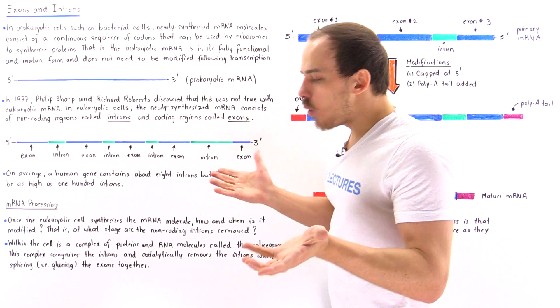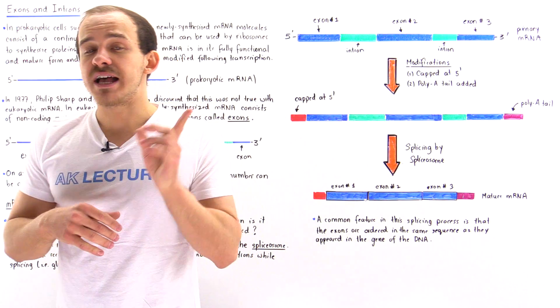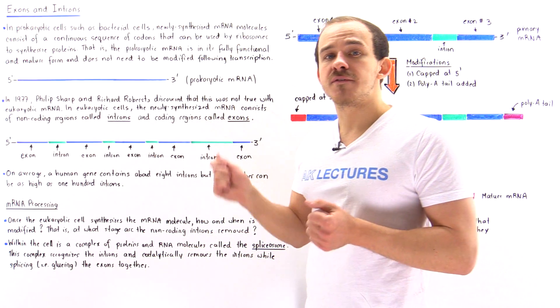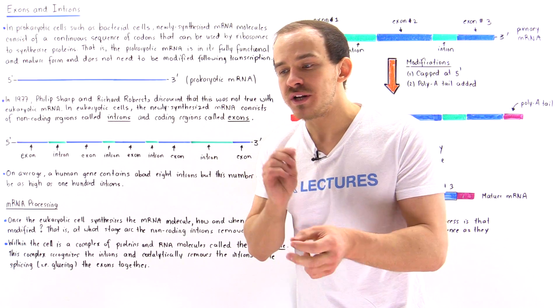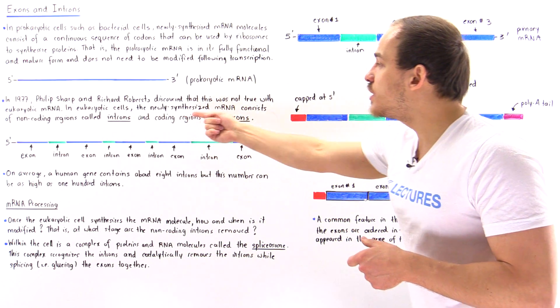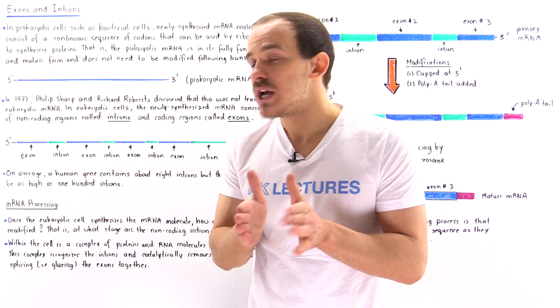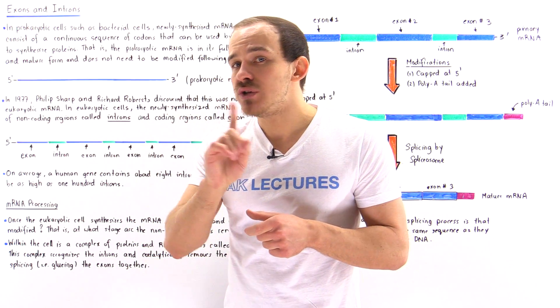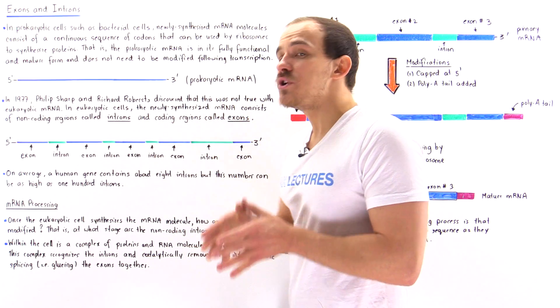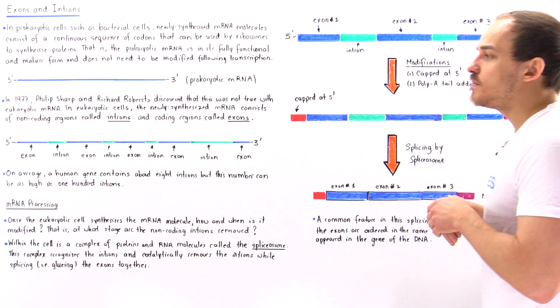Now, for quite some time, we thought the same exact thing was true in eukaryotic cells, such as human cells. But in 1977, Philip Sharp and Richard Roberts basically discovered that this was not true when it came to mRNA in eukaryotic cells. In fact, in eukaryotic cells, the newly synthesized mRNA molecule consists of these intron sections, these sequences of nucleotides that do not code for any protein. And they also contain these exons, which were the regions that contain the codons that did code for that particular polypeptide chain.